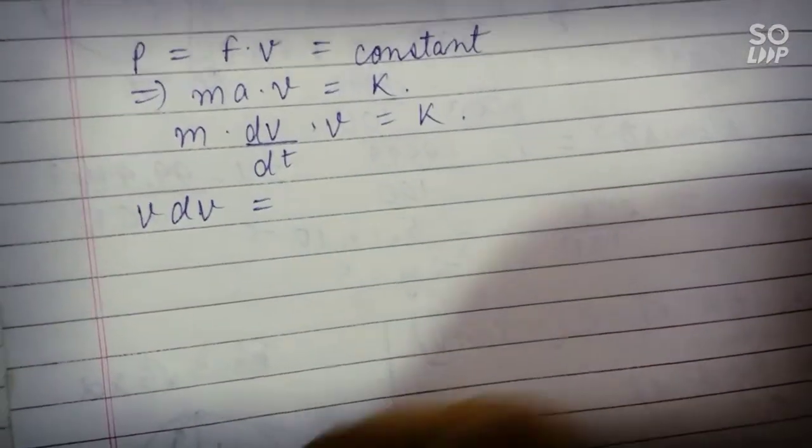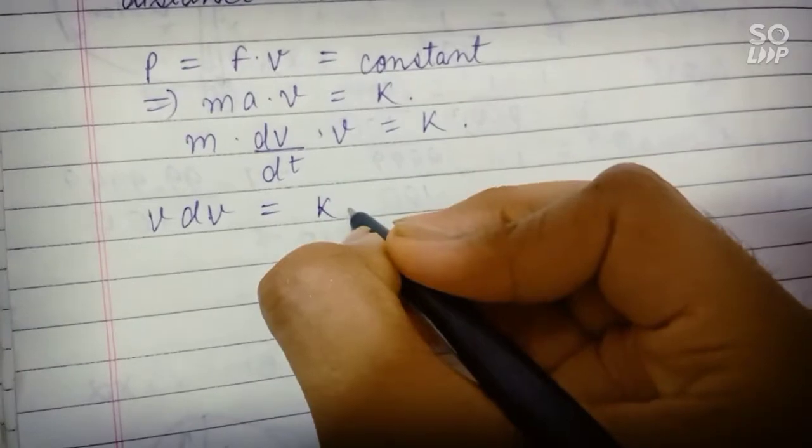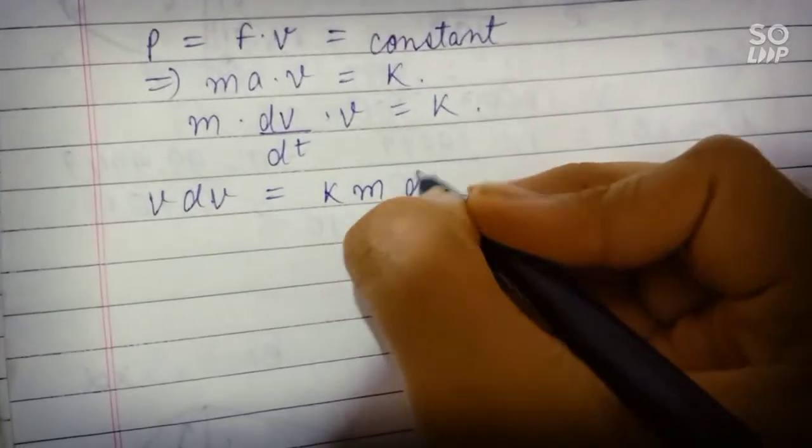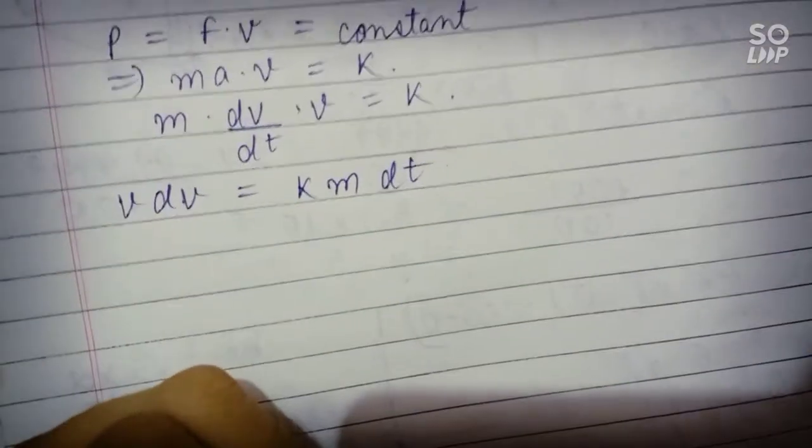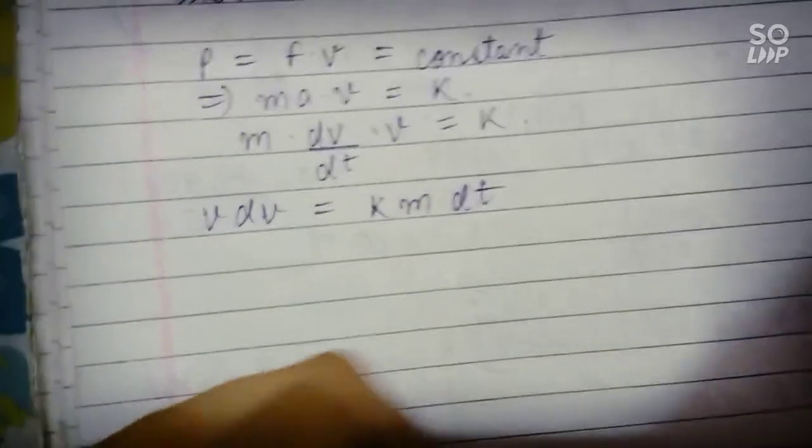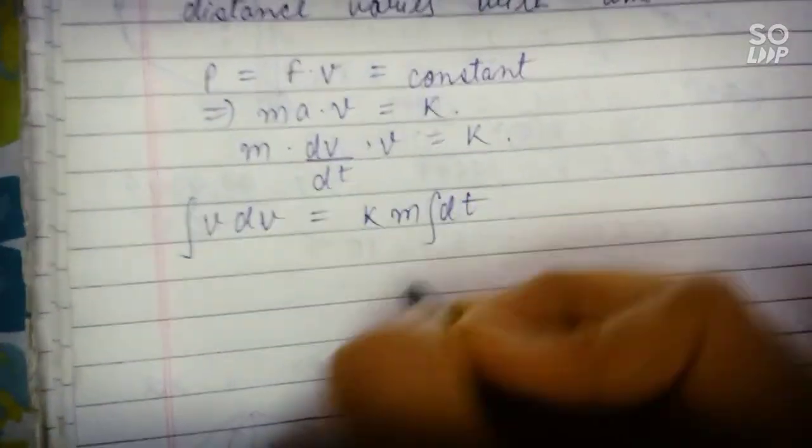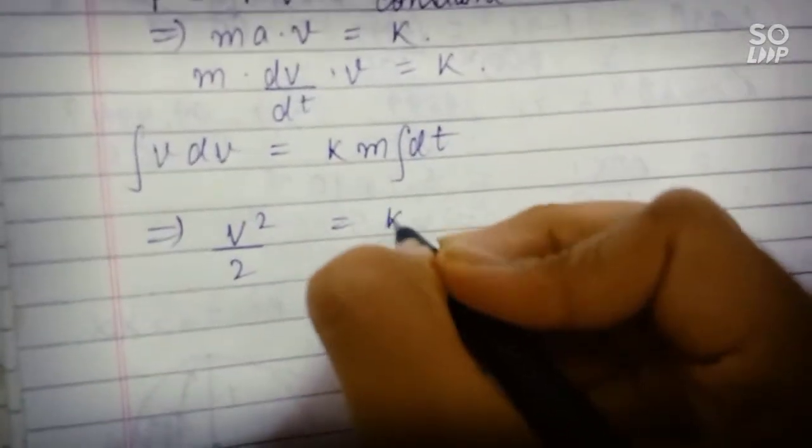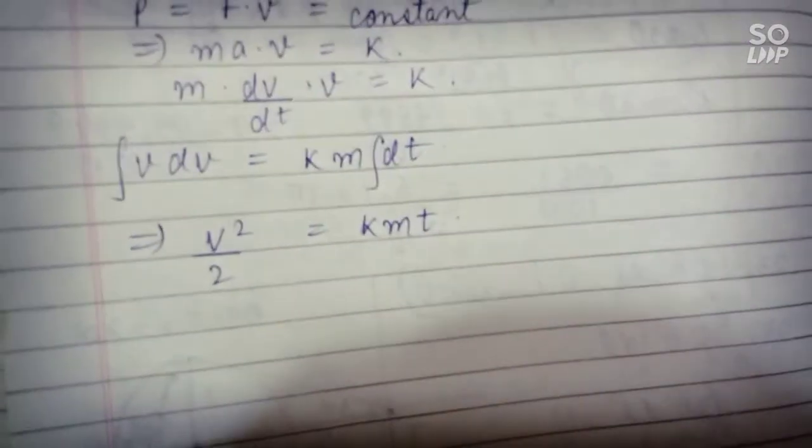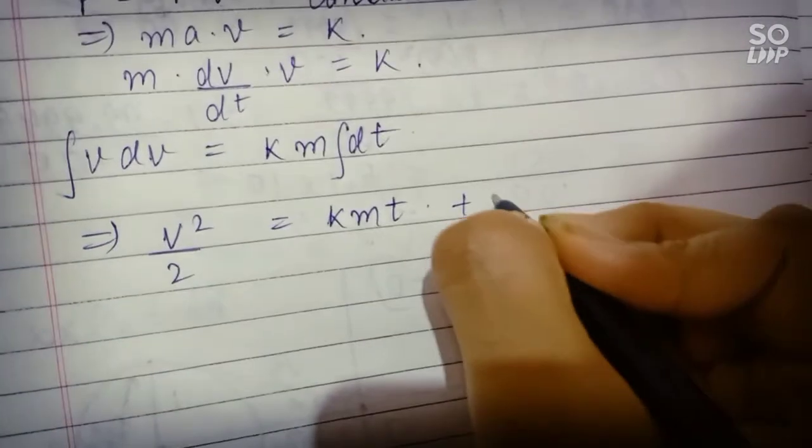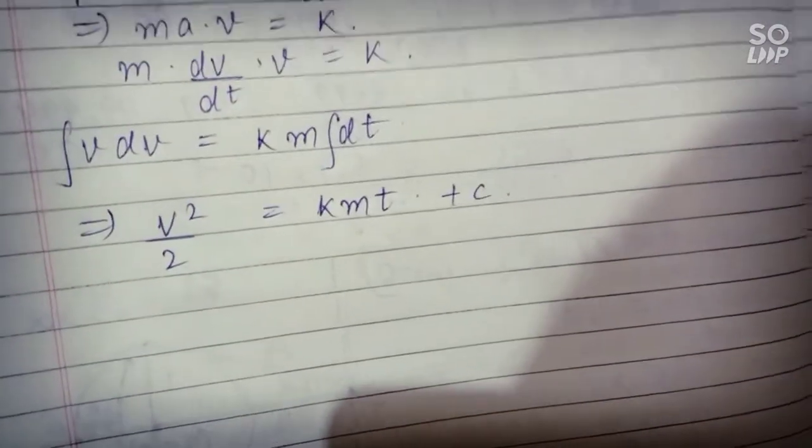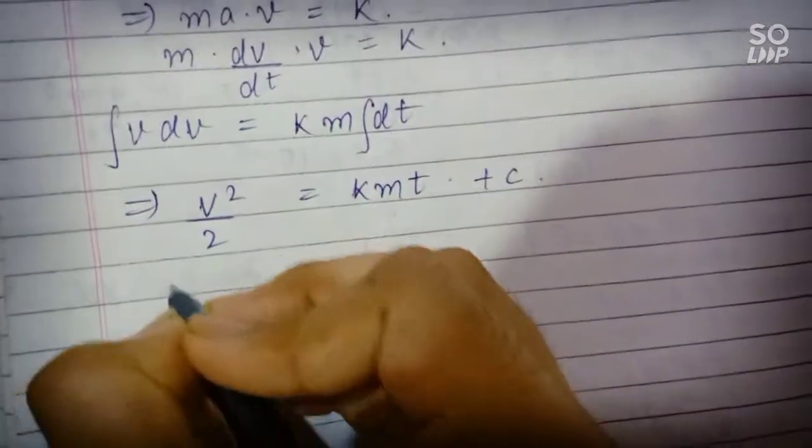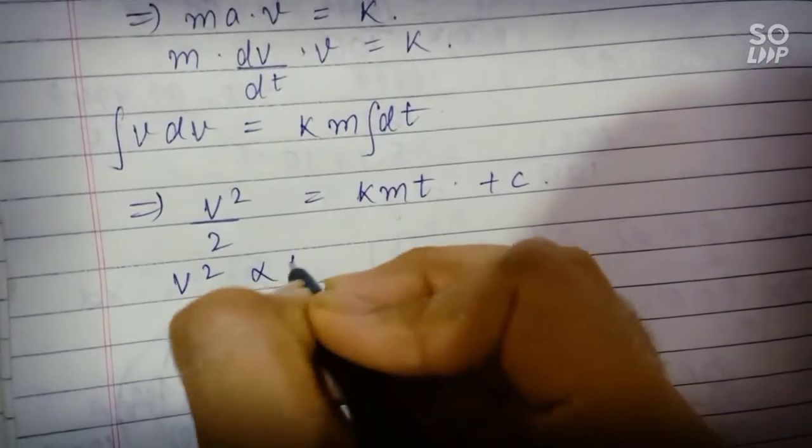V dV equals to K into M into dt. Now we'll integrate them. We'll get some constant, so we get to know that V square is directly proportional to T.